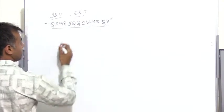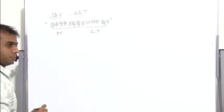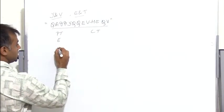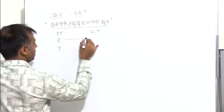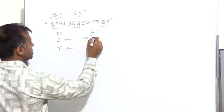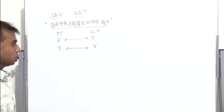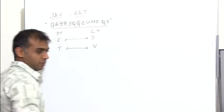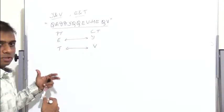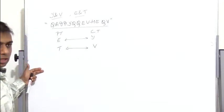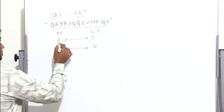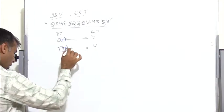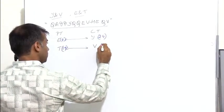So we have the ciphertext, and the alphabets y and v correspond to e and t respectively. Since nothing else is mentioned, we assume 26 alphabets represented by numbers 0 to 25. So the plaintext e is 4, t is 19, y is 24, and v is 21.